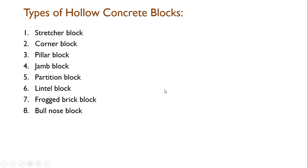Under hollow concrete blocks, there are various types: stretcher blocks, corner blocks, pillar blocks, jamb blocks, partition blocks, lintel blocks, frog brick blocks, and bull's nose blocks. At this juncture, we shall discuss only a few types.